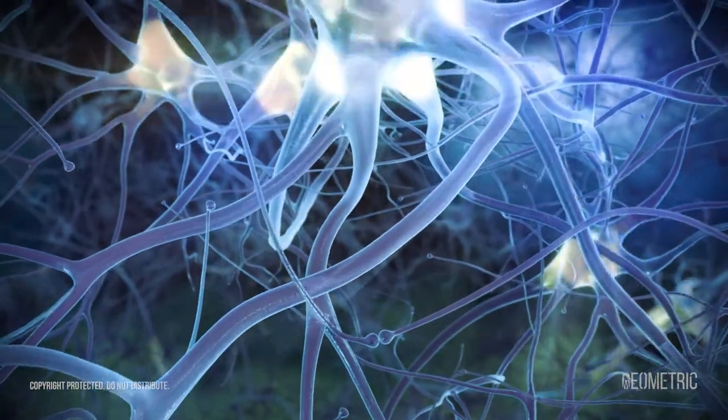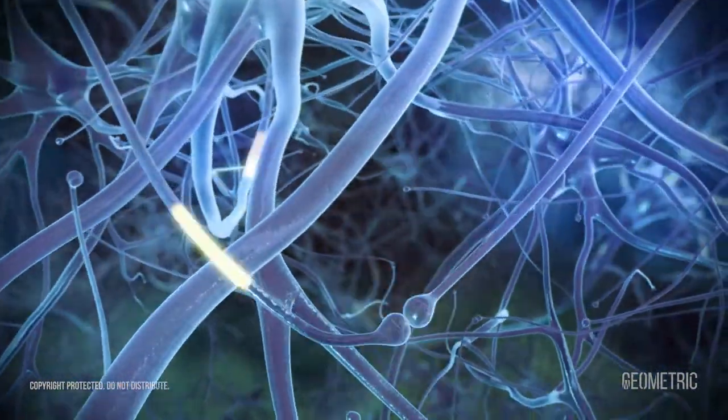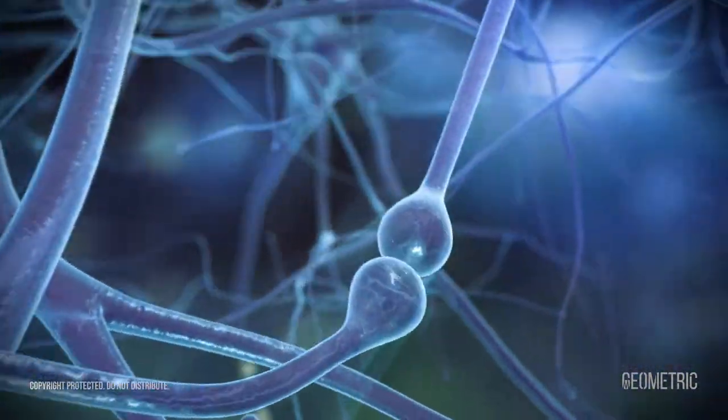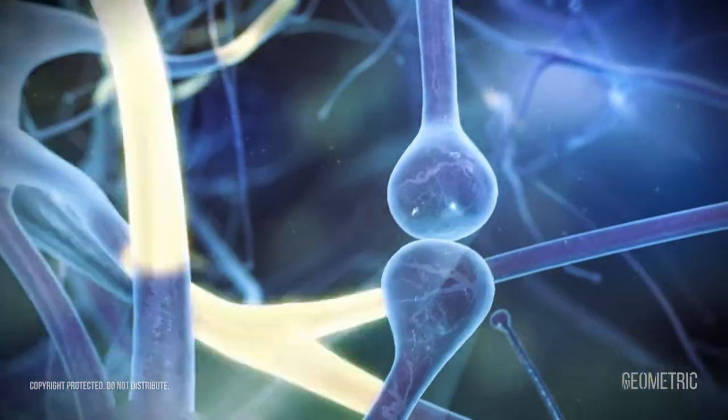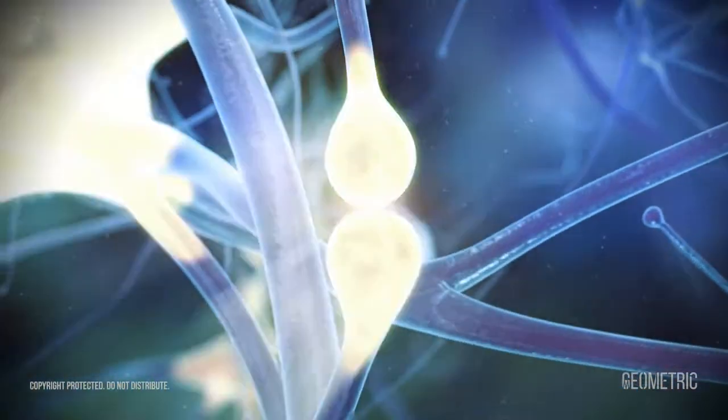Fragile X mental retardation protein, or FMRP, is present at high concentrations at excitatory synapses and it plays an important role in regulating protein synthesis in neurons.